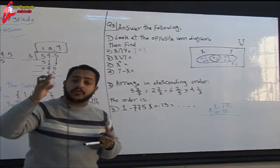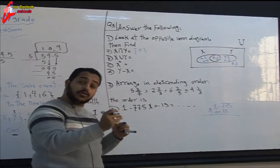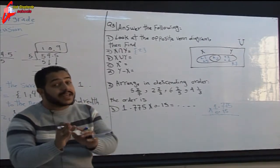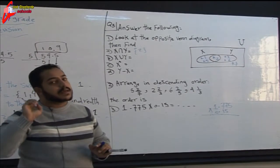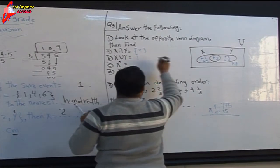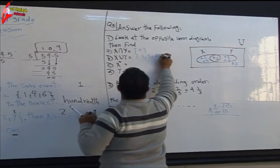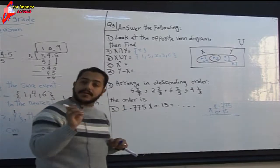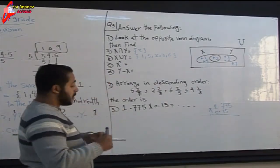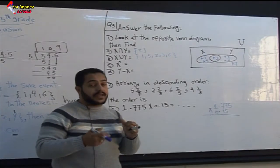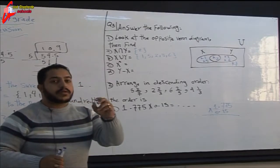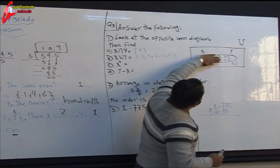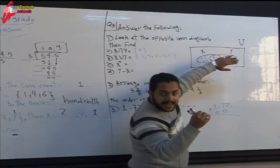Find X union Y — we want all elements of X and Y together. Don't repeat elements. The elements of X and Y are 1, 5, 2, 3, and 6. So X union Y equals {1, 2, 3, 5, 6}. Now find the complement of X: the elements that belong to the universal set but not to X. Hiding X, the remaining elements are 3, 6, and 7.